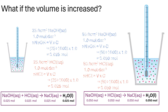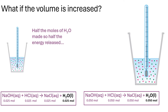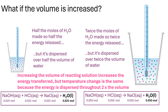So what does this actually mean? If you've got twice the number of moles of water, you have twice the energy released. But it's dispersed over twice the volume of water. So the effect on the temperature change — although you're making more energy, the energy is dispersed over a larger volume of liquid — means the temperature change that's picked up stays the same.